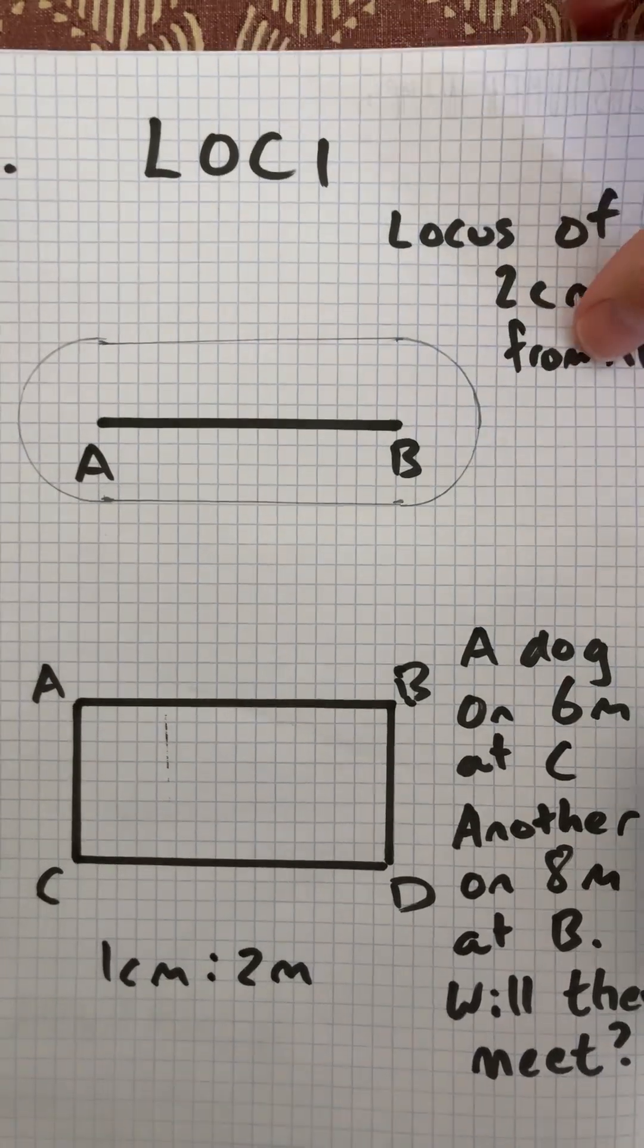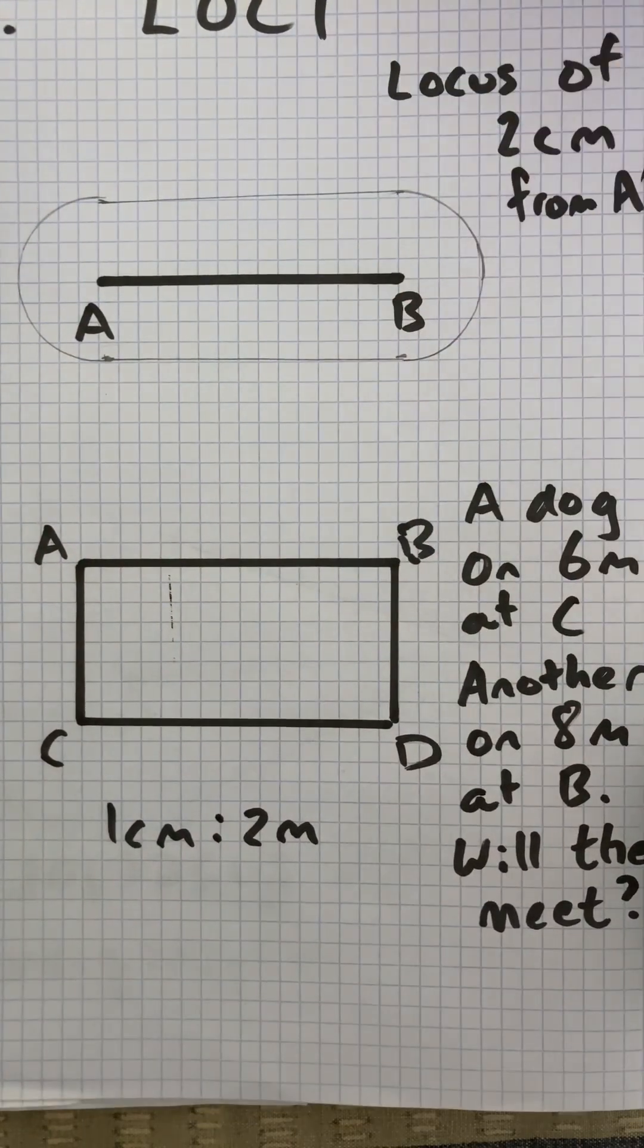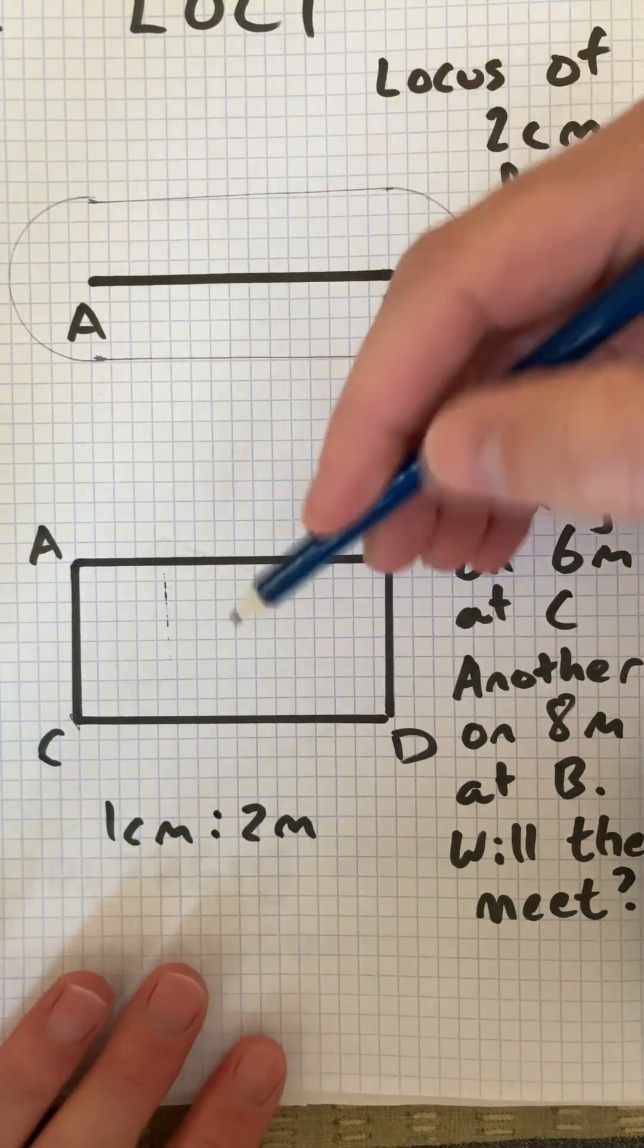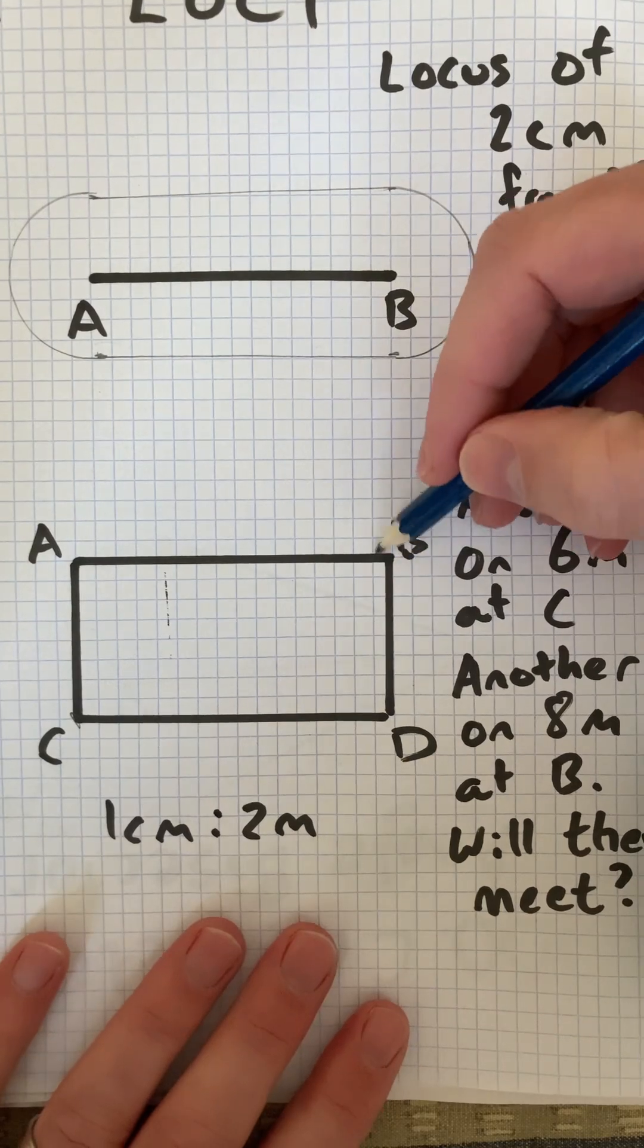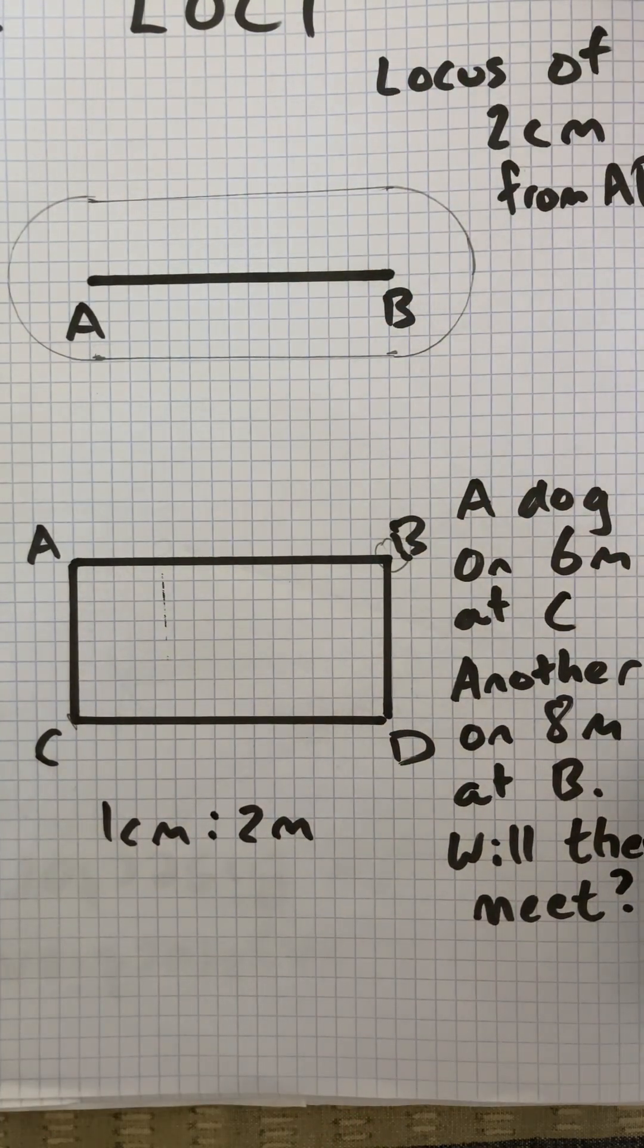We'll do another locus. This time, imagine a shape ABCD has a dog chained at point C with a 6m lead, and another dog at point B with an 8m lead. Will they meet?